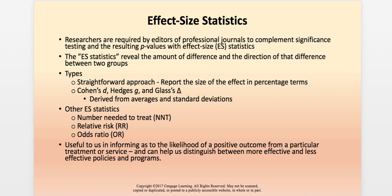Effect size statistics reveal the amount of difference and the direction of that difference between two groups. This is part of what the textbook calls the new statistics. There are different kinds or types of effect size statistic analyses, and some of these — such as number needed to treat and relative risk — you'll hear referred to in the Gambrel text. This is just the kind of thing that tells you there is a lot to consider when pursuing evidence-based practice.